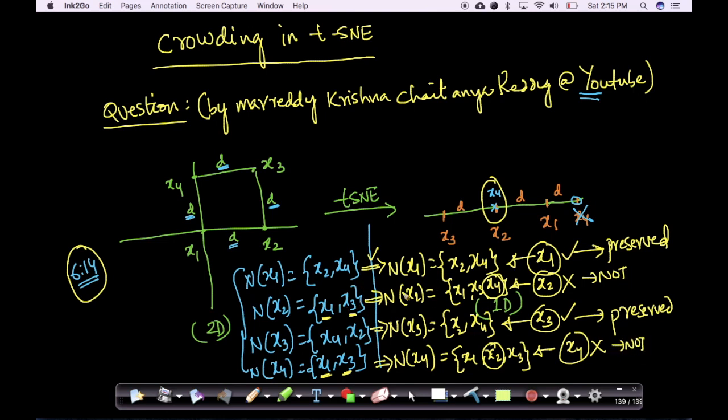Preservation basically means that these two sets should be exactly same. That's an important distinction. And the neighborhoods of all the points should be preserved if your t-SNE is working perfectly.